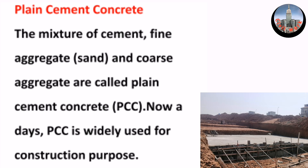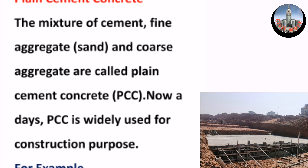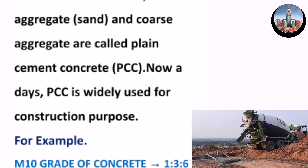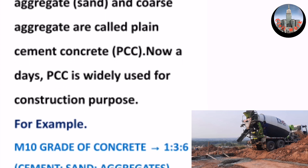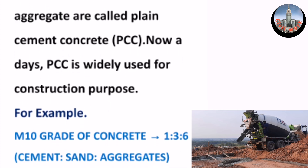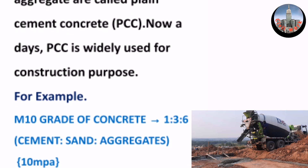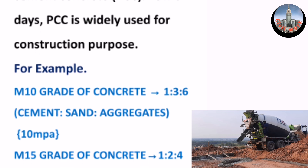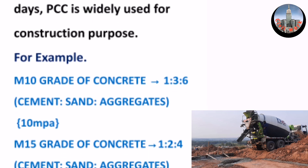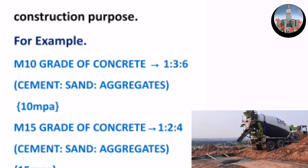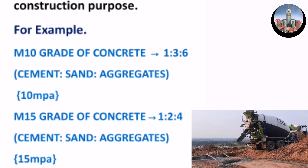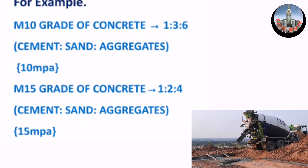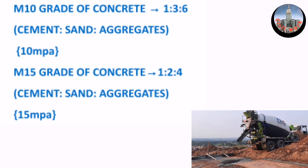Moisture or other chemicals in soil, like sulfates, may attack concrete and can weaken it. Plain cement concrete (PCC) is a mixture of cement, fine aggregate (sand), and coarse aggregate. PCC is widely used for construction purposes. For example, M10 grade of concrete has a mix ratio of 1:3:6 — one part cement, three parts sand, six parts aggregate — giving 10 MPa.